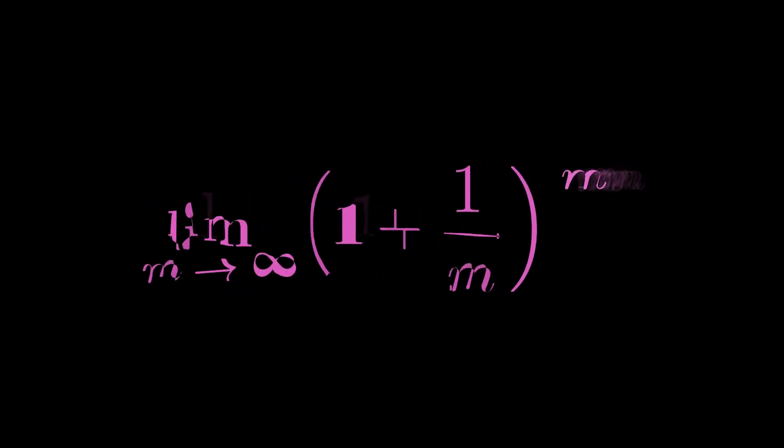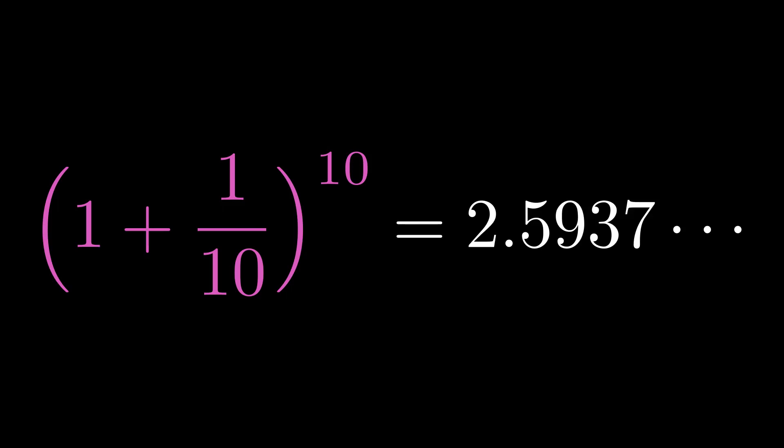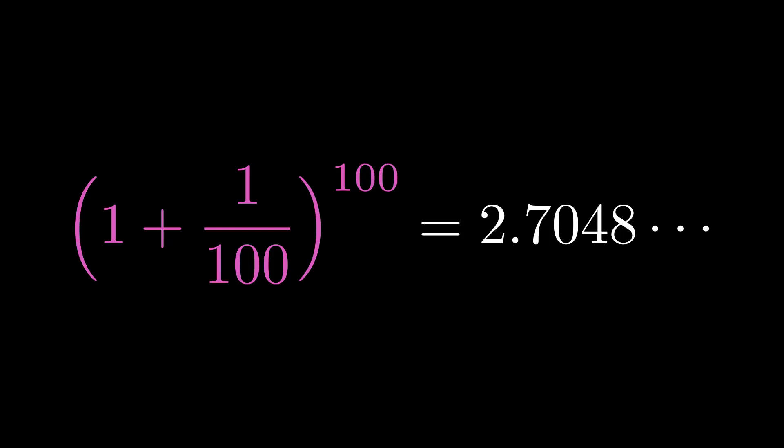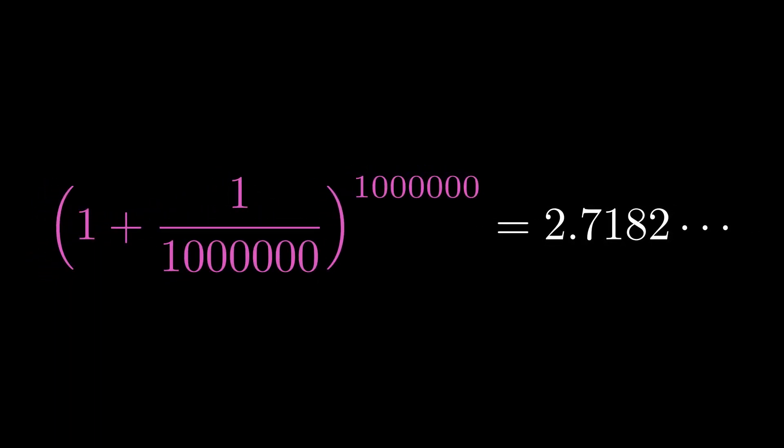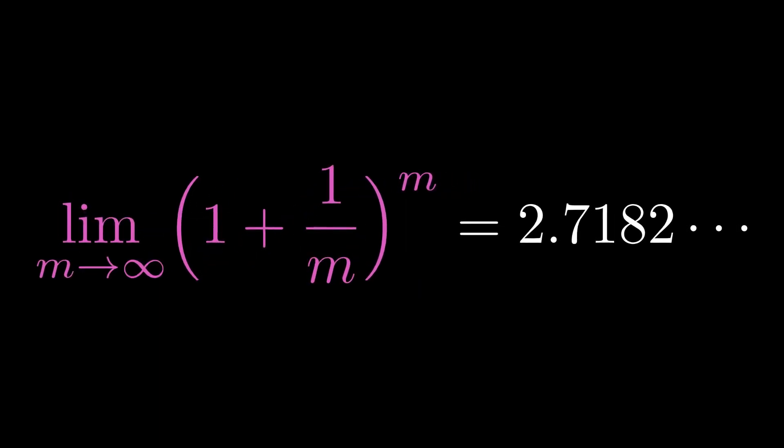When m is 10, the pink expression is around 2.594. When m is 100, the result is around 2.705. When m is 10,000, the result is roughly 2.718. When m is a million, the pink expression is still around 2.718. No matter how much more we increase m, the pink expression stops going up at around 2.718. Congratulations!